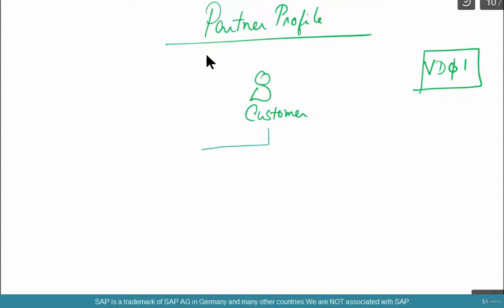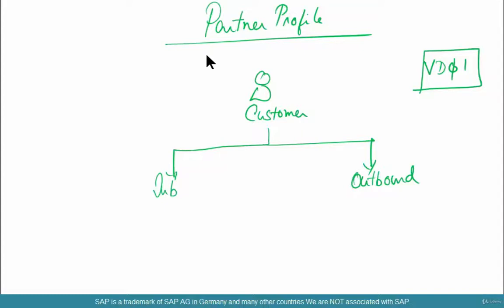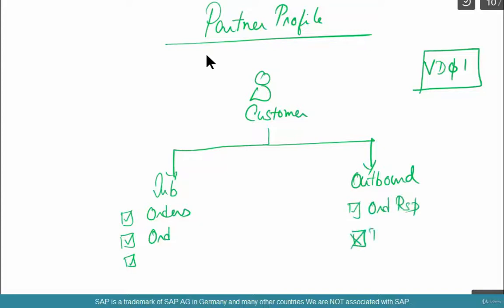The simplest explanation for a partner profile is that it's like a permission slip — or like a gate pass. Inbound and outbound: for inbound, what are the message types that are allowed? We can take orders, we can take order modifications, we can send out order responses, maybe no advanced shipment notifications, but we do send out invoices. These are like the properties of a gate pass for a particular person — can he go into this department, can he have access to the stairs?